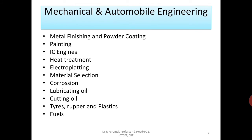In mechanical and automobile engineering, chemistry plays a role in metal finishing and powder coating — for example, giving an attractive finish to a car. IC engines are a major application of chemistry. Other areas include heat treatment, electroplating, material selection, corrosion, lubricating oil, cutting oil, tyres, rubbers and plastics, and fuels.